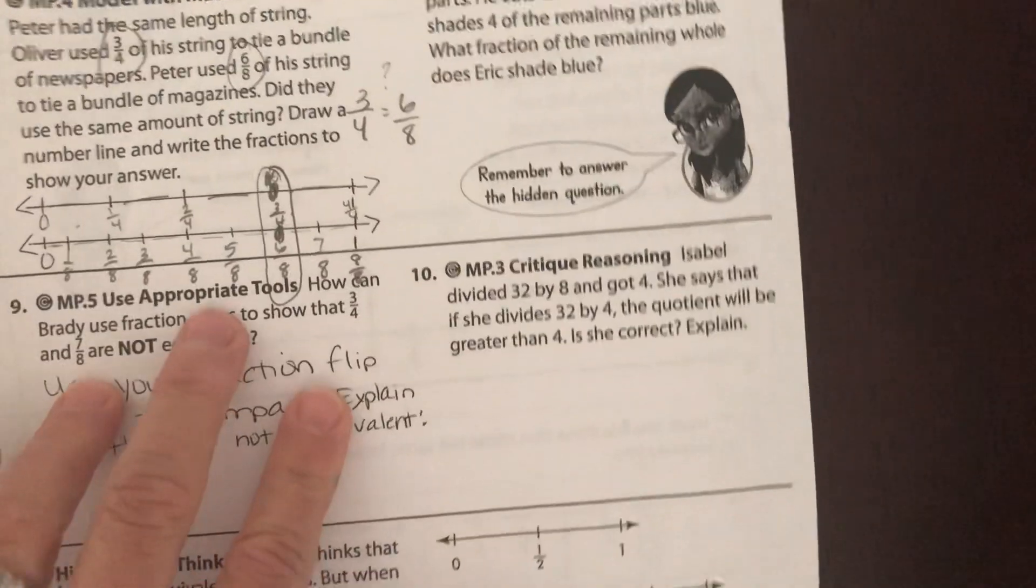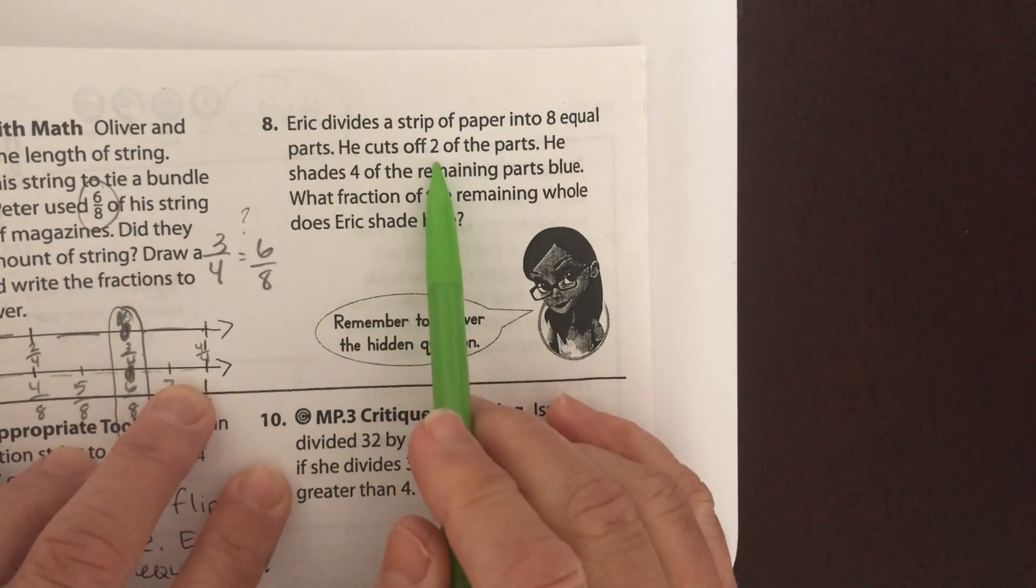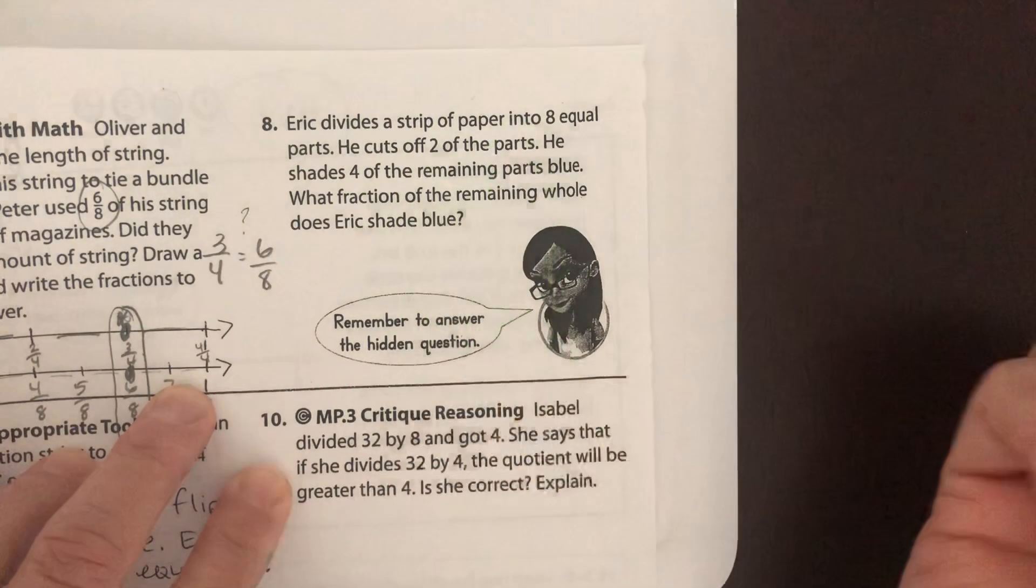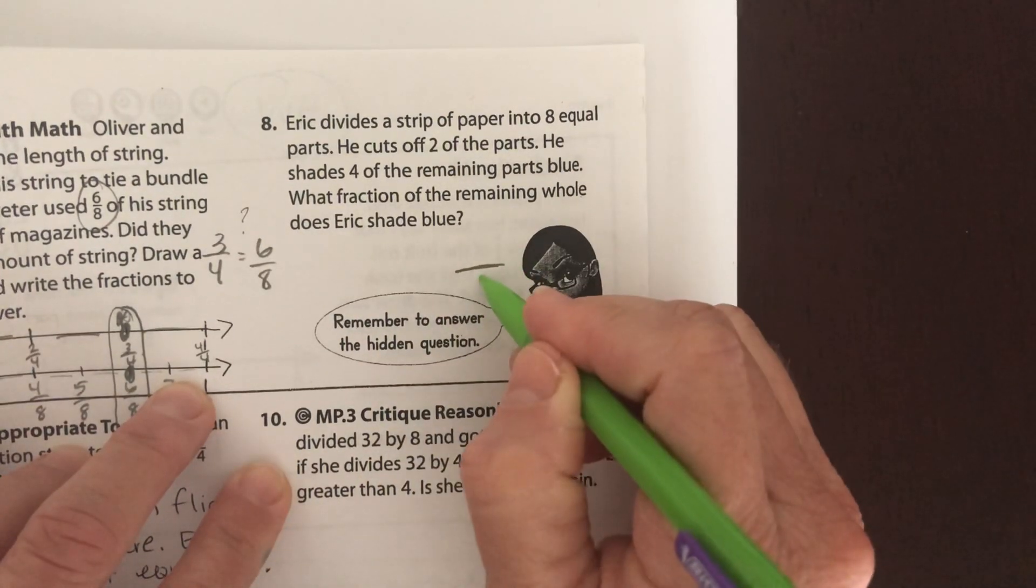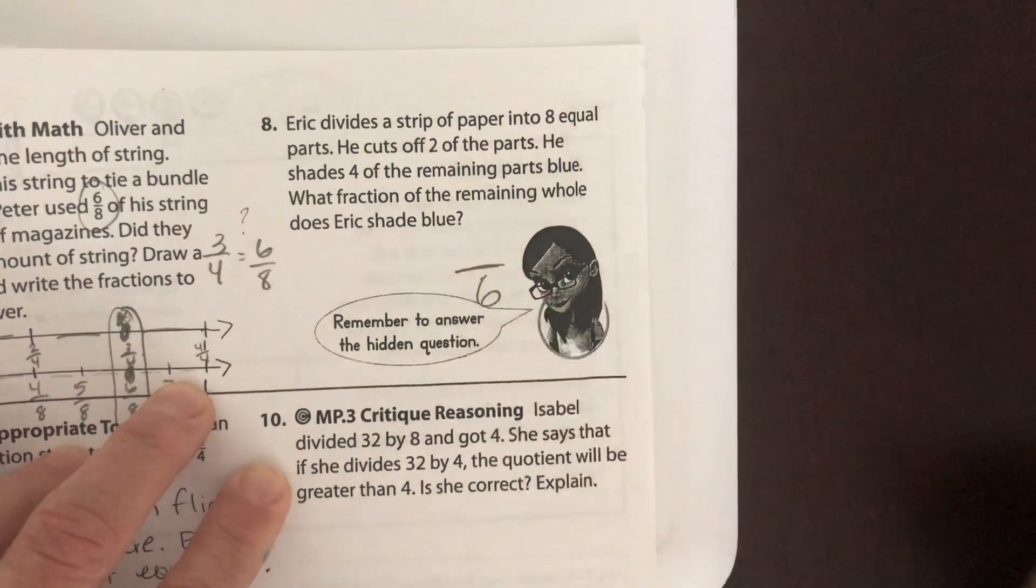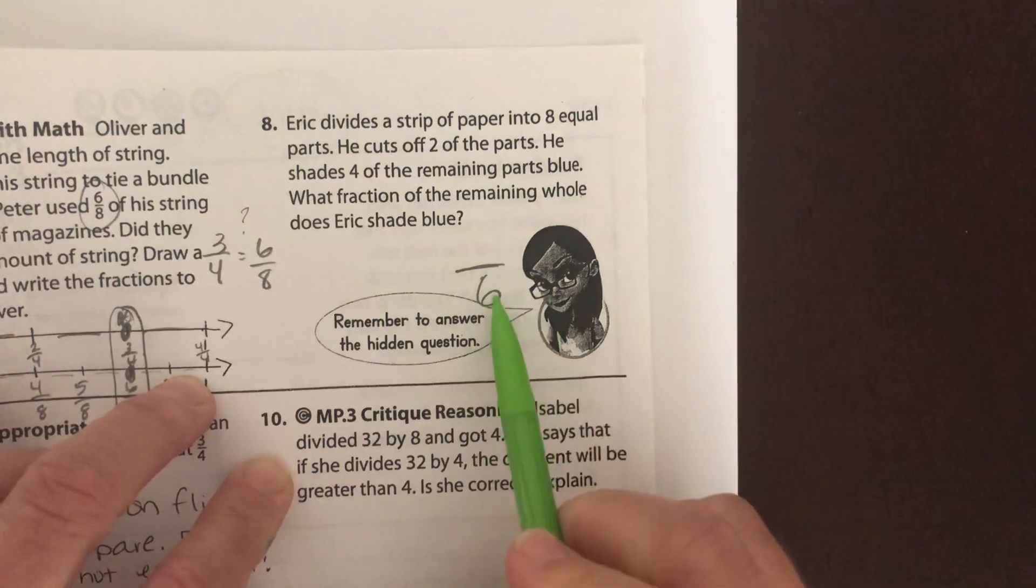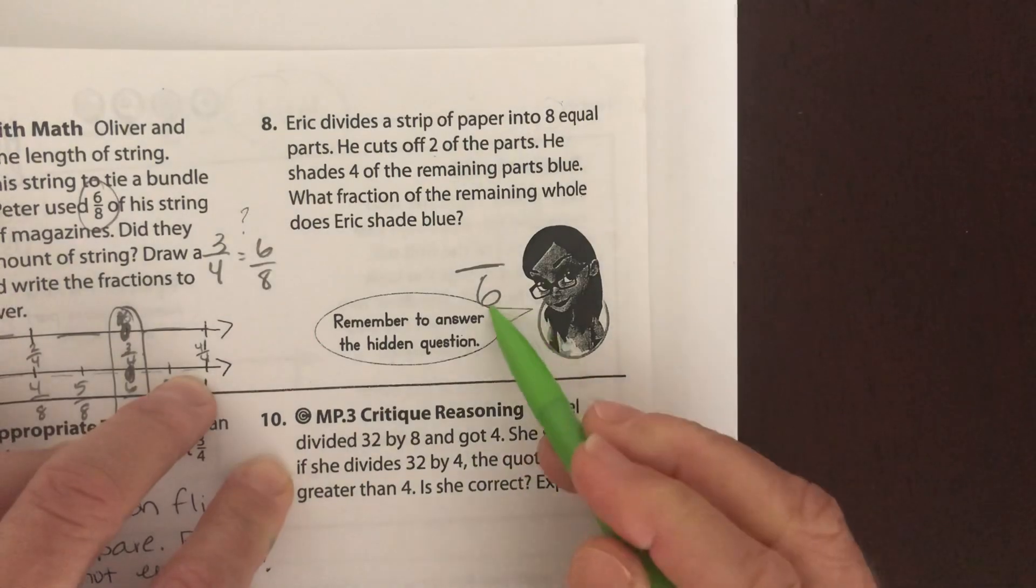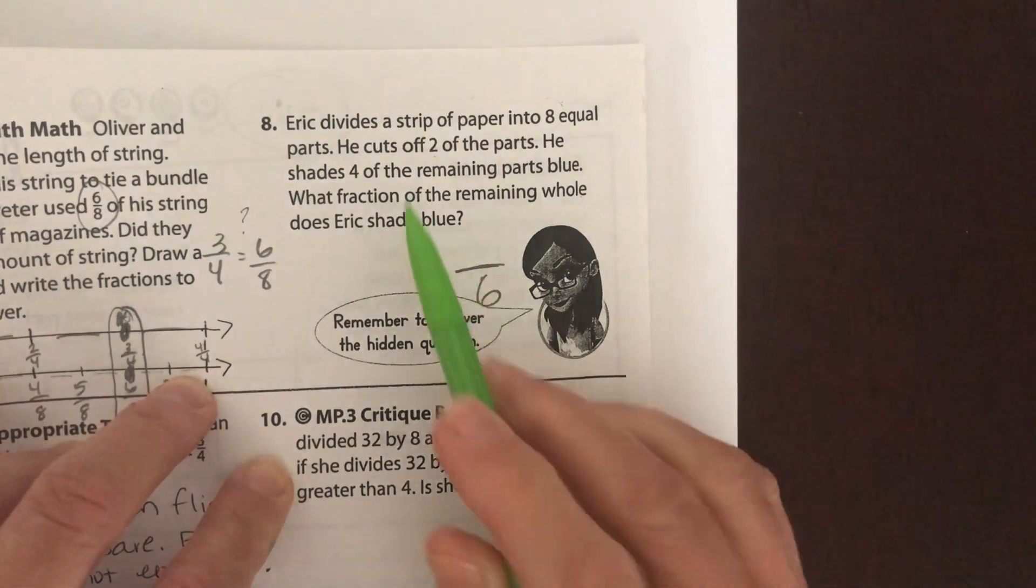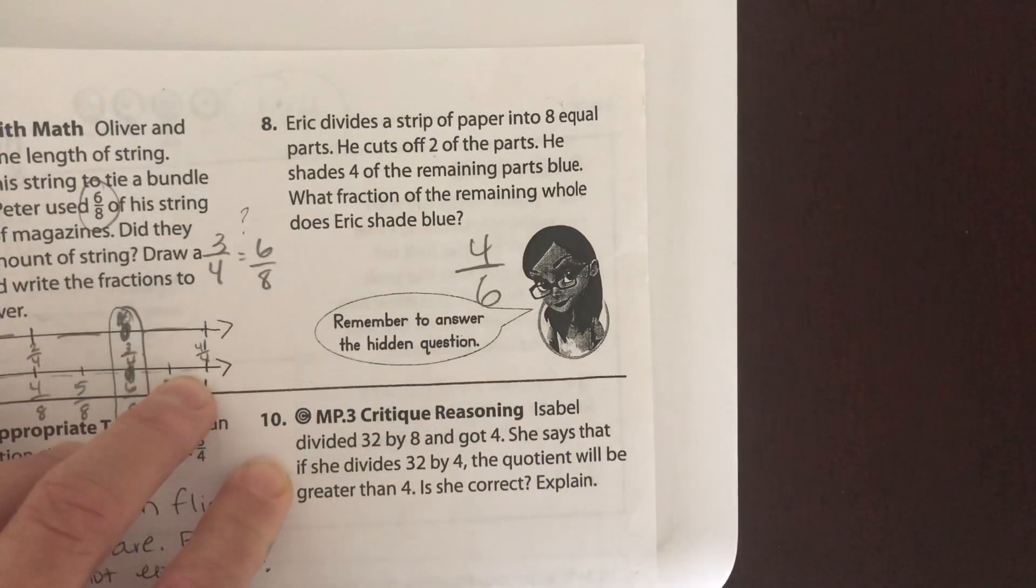Okay, number 8. Eric divides a strip of paper into 8 equal parts. This one's tricky. He cuts off 2 of the parts. Okay, so we had 8 parts. He cut off 2. So what's our denominator now? How many do we have left? 6. He shades 4 of the remaining parts blue. We only have 6 remaining parts. We had 8 and he cut off 2 of them. So now we only have 8 parts. He shades 4 of them blue. So he shaded 4 out of the 6. He shaded 4-6ths blue.